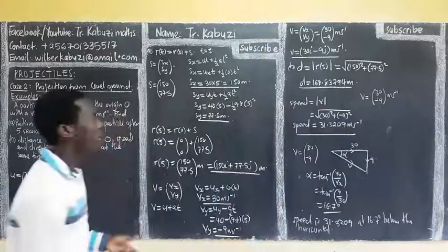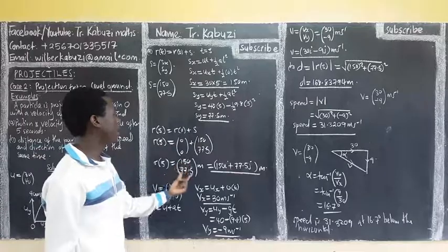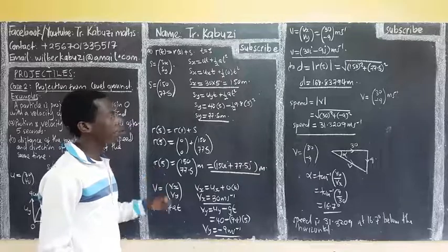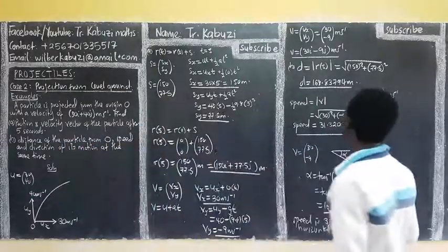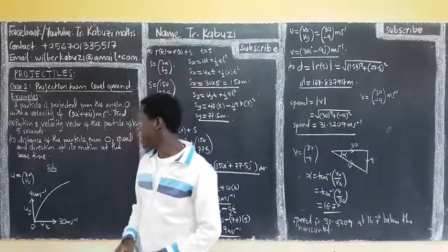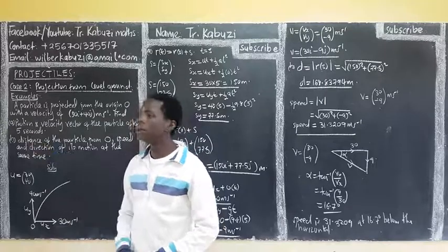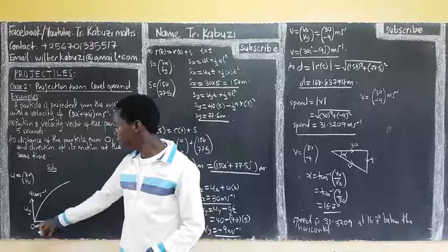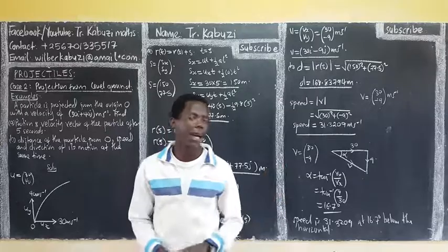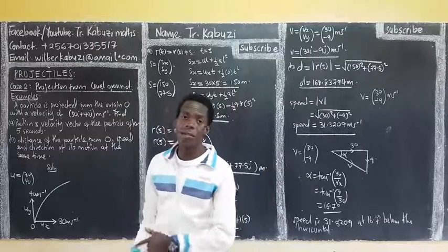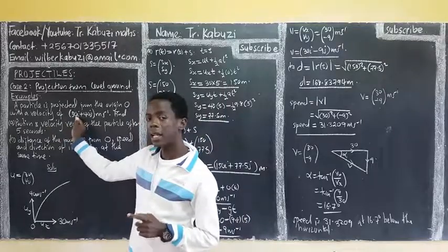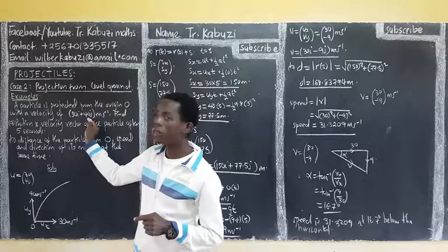From the distance, how far the particle is from the origin — if the particle is at position (150, 77.5), meaning if you get the modulus, that would be the distance of the particle from the origin. And I think you see what happens when they give you the initial velocity in terms of i and j — you already resolve it. This component gives you uy and this one gives you ux, so you don't need to resolve further; they are giving it to you at once.